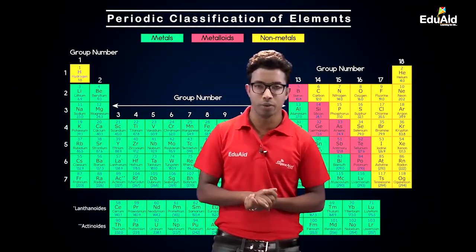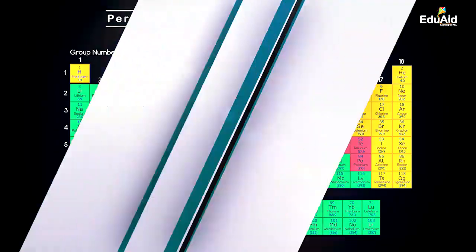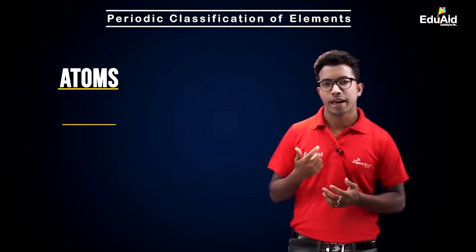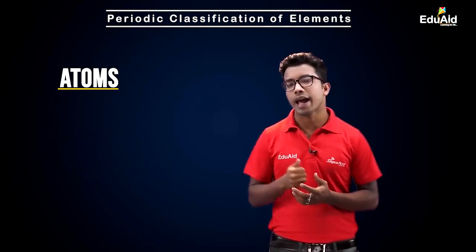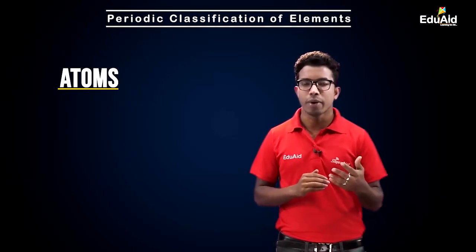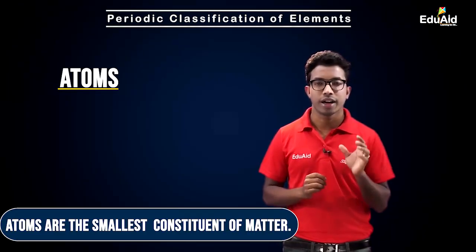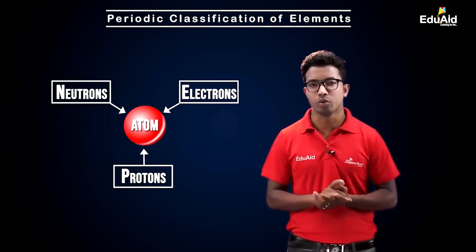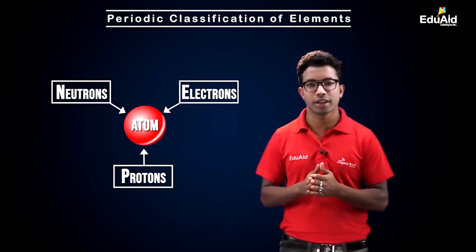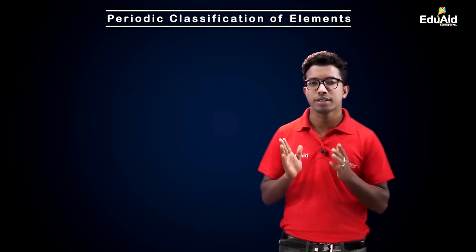In this chapter I will be frequently using terms like atoms, elements, and molecules, so let's first understand them. Atoms are the smallest constituent of matter. Atoms are composed of electrons, protons, and neutrons — these are the subatomic particles, and all atoms are made up of these three subatomic particles.